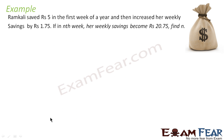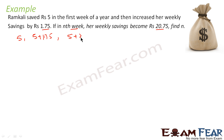Let us take one more example. Ram Kali saved 5 rupees in the first week of the year and then increased her weekly savings by 1.75 rupees. In the first week it is 5 rupees, second week 5 plus 1.75, third week 5 plus 2 times 1.75, and so on. This is a clear indication of AP where a is 5 and d is 1.75.